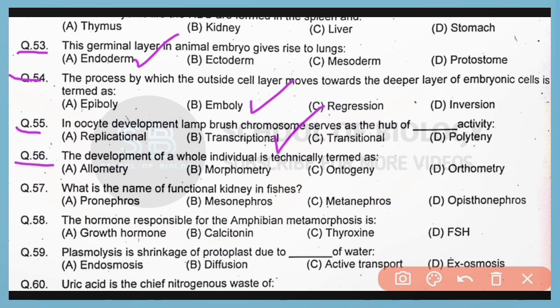Question number 56. The development of a whole individual is technically termed as ontogeny, while the development of a whole species is known as phylogeny.